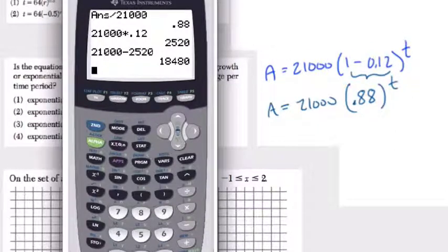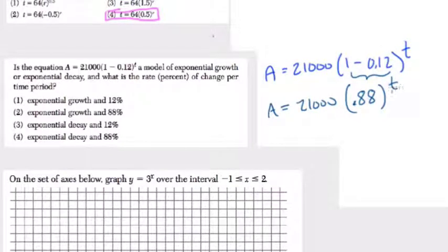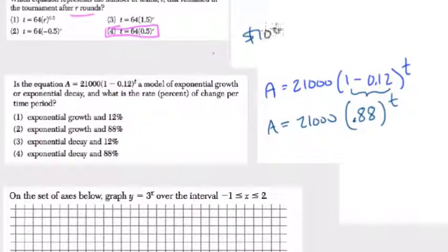So each time, we're taking 88% of what we had before, but that means if you have 88% of what you had to begin with, you've lost 12%. Think of the example if you have $100, and I say take 88% of that. Well, to do that, you multiply it by 0.88.